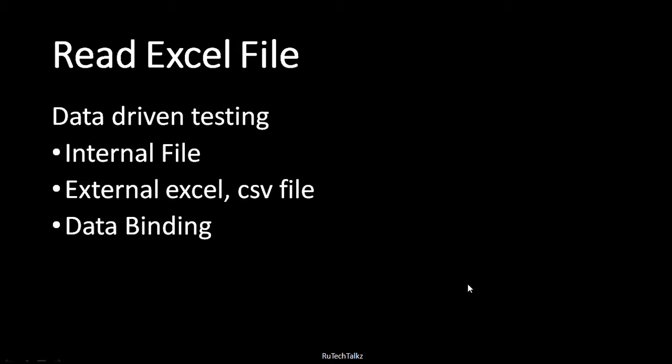We learned how to add the external Excel or CSV file into a project and read the data from that file, and use that data in our test cases. We have also learned about data binding, how to do data binding, and read the data from Excel, take the data from Excel to variables, and then read those variables. For data-driven testing, please go through my earlier tutorials — I have shared the link in the description below.